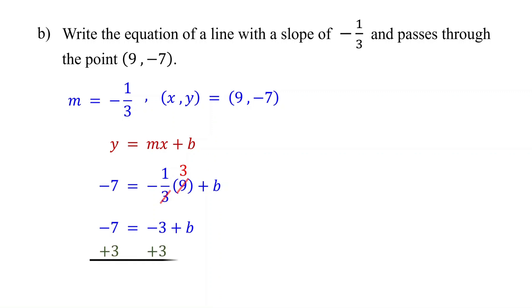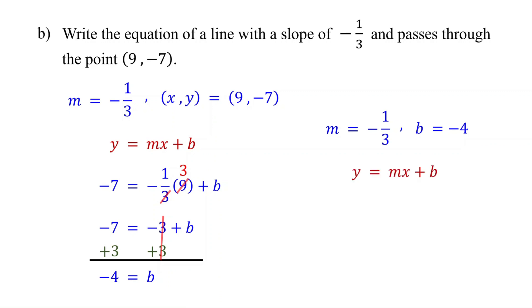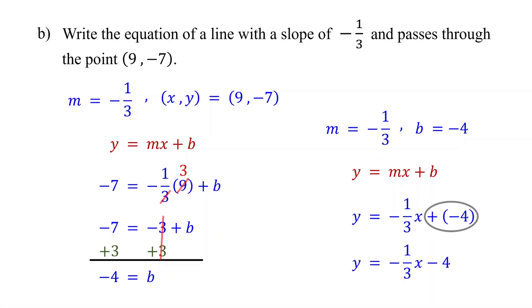Add 3 to both sides to isolate b. On the left, negative 7 plus 3 is negative 4. On the right, these cancel, leaving b. Now we have values for both m and b. Substitute these values back into the slope-intercept form: replace m with negative 1 third and b with negative 4. Remember, adding a negative is the same as subtracting the positive. This is your equation in slope-intercept form.